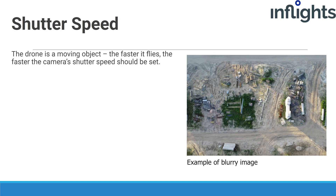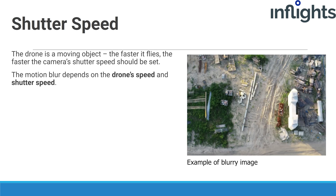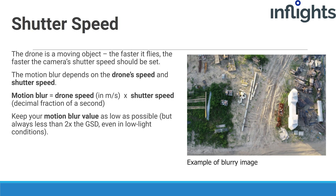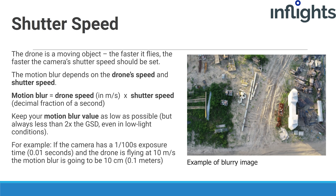The drone is usually moving at a constant speed throughout the mission, so to avoid motion blur, you want the shutter speed to be fast. How fast depends on the ground sampling distance and the drone's speed. To calculate the motion blur parameter, multiply the drone speed in meters per second by the shutter speed. Keep your motion blur value as low as possible. Do not exceed the motion blur parameter more than two times the GSD of the project. For example, if the camera has a 1/100th of a second exposure time and the drone is flying at 10 meters per second, the motion blur is going to be 10 centimeters.